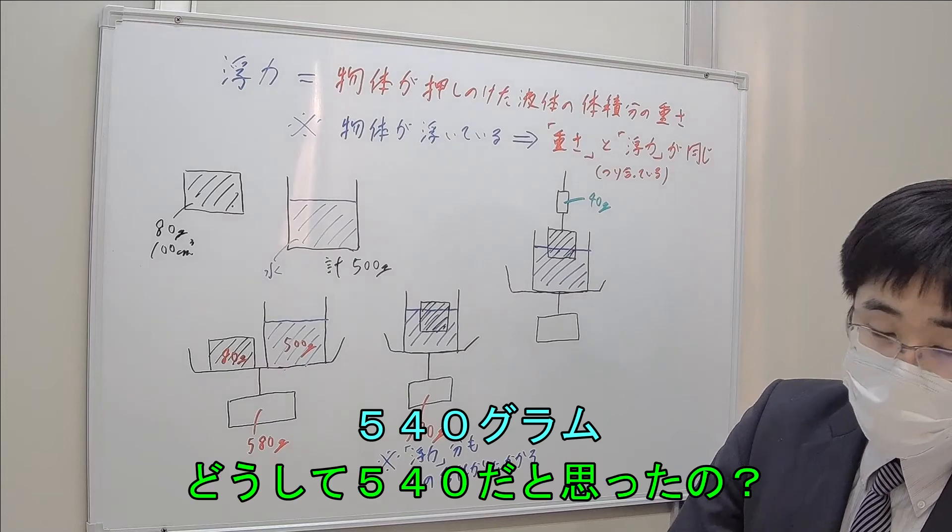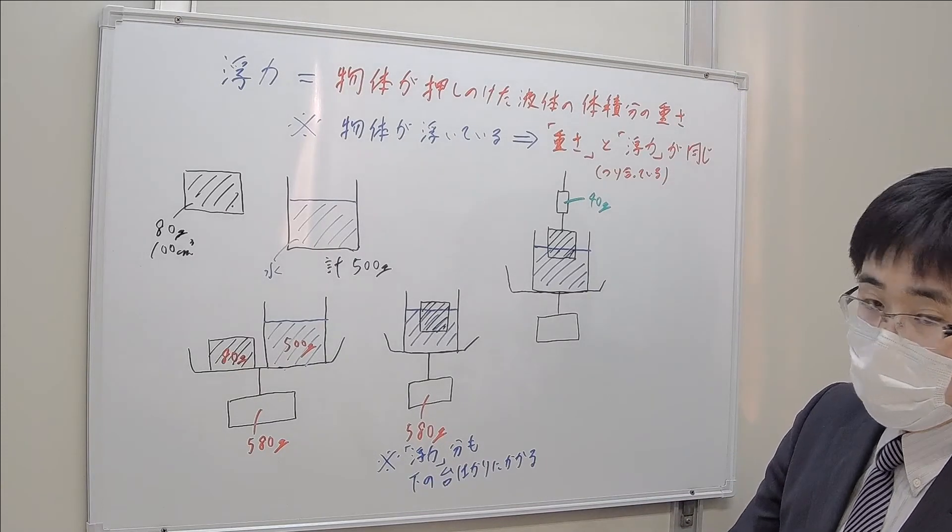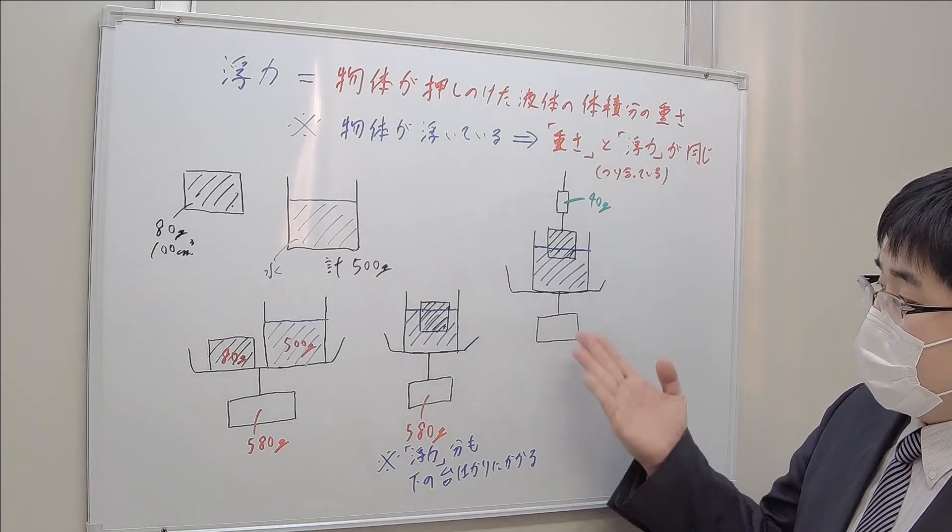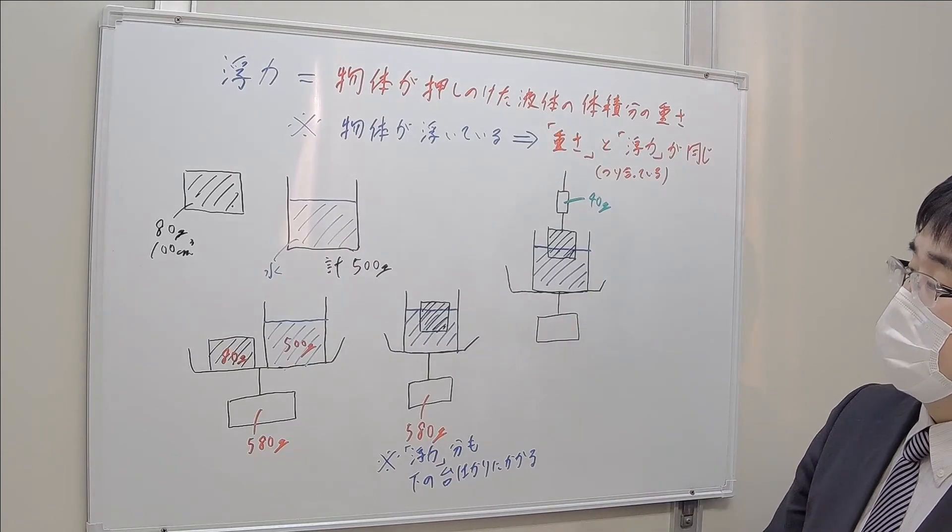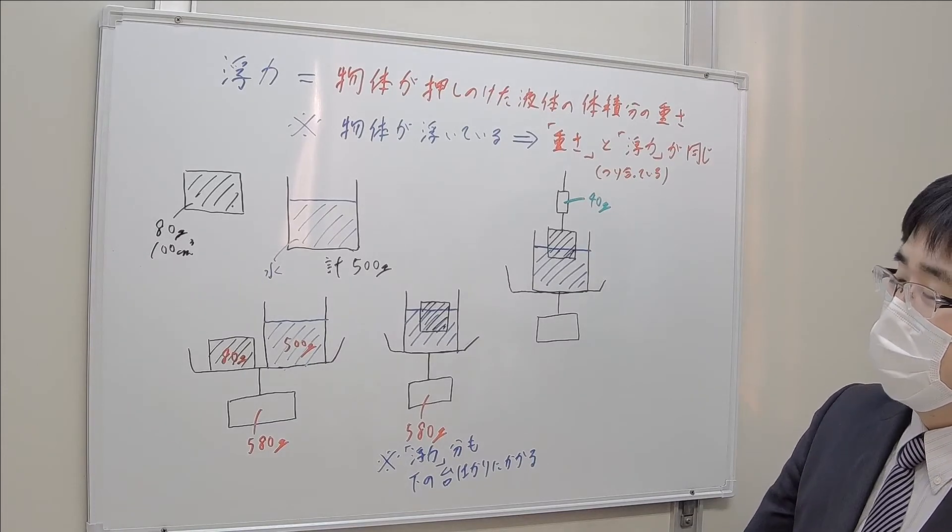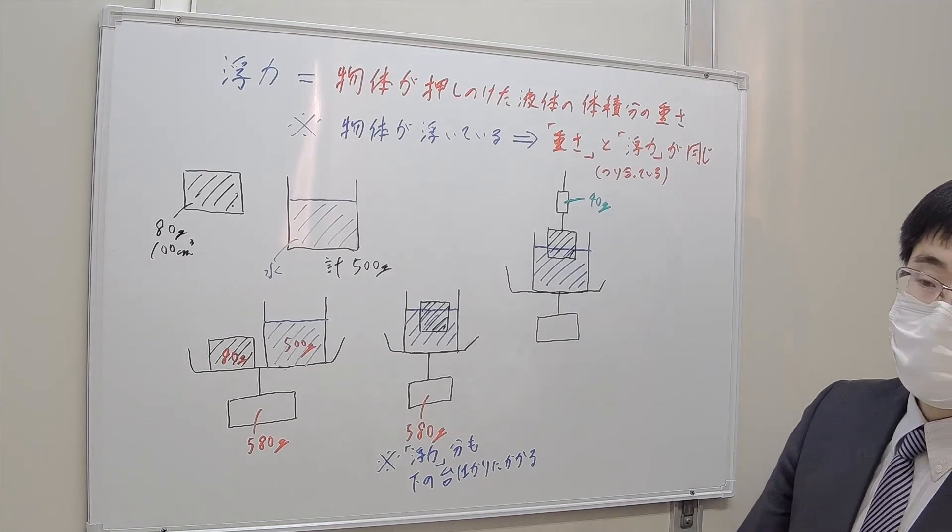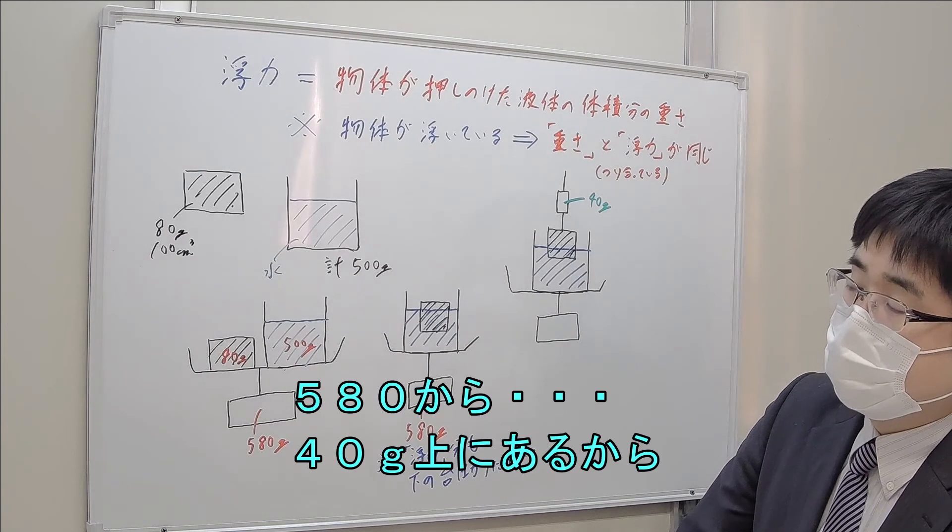うーんと、540g。540g。どうして540gだと思ったの？上に40g。はい。上に引っ張られて、40gを、580gから引いたの？80gから引いたってことね。いや、変われたら、そんな感じなんですよ。Hmm, 540g. Why did you think 540g? Because 40g is pulled up, so you subtracted 40g from 580g? So you subtracted from 580g. Yeah, if you think about it, that's right.